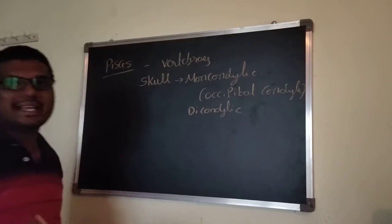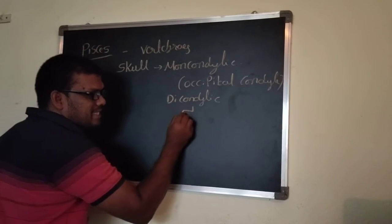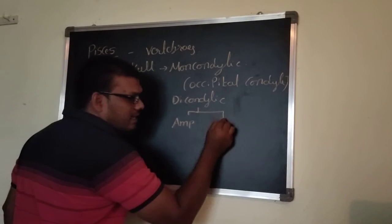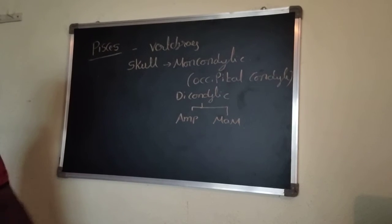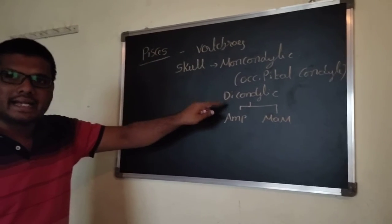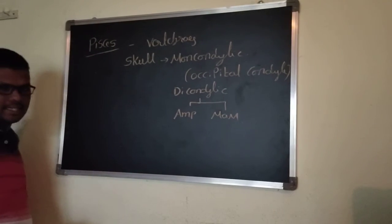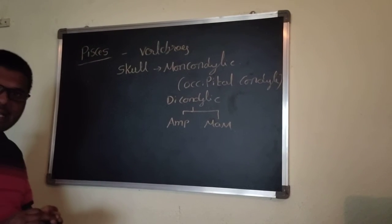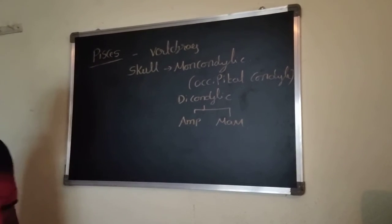In which classes are dicondylic skulls seen? One is in amphibians, another is in mammals. In these two classes only, the skull is dicondylic. If you observe Pisces, reptiles, and aves, the skull is monocondylic.